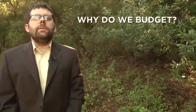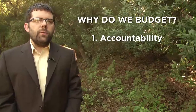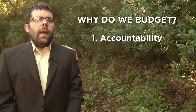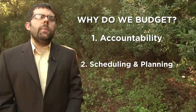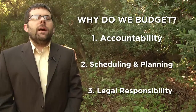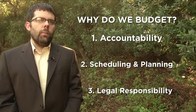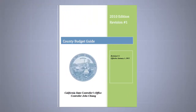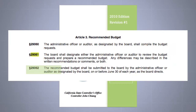Why do we budget? The first reason is accountability. We budget so we can explain what funds we have, where they're going, and why they're going there. We also budget so we can schedule and plan programs. The third reason we budget is because it is our legal responsibility. The County Budget Act outlines the state controller forms and schedules necessary for the county budget to conform with state law. The County Budget Act specifically states that the administrative officer — in our case the county CEO — must submit a recommended budget to the Board of Supervisors for review and approval on or before June 30th of each year.